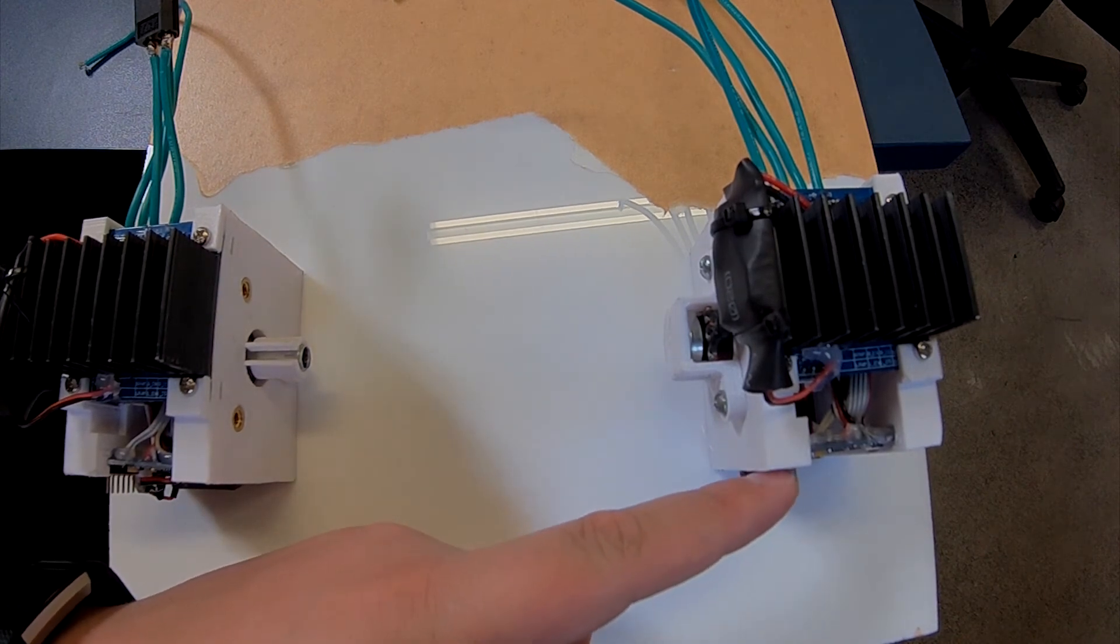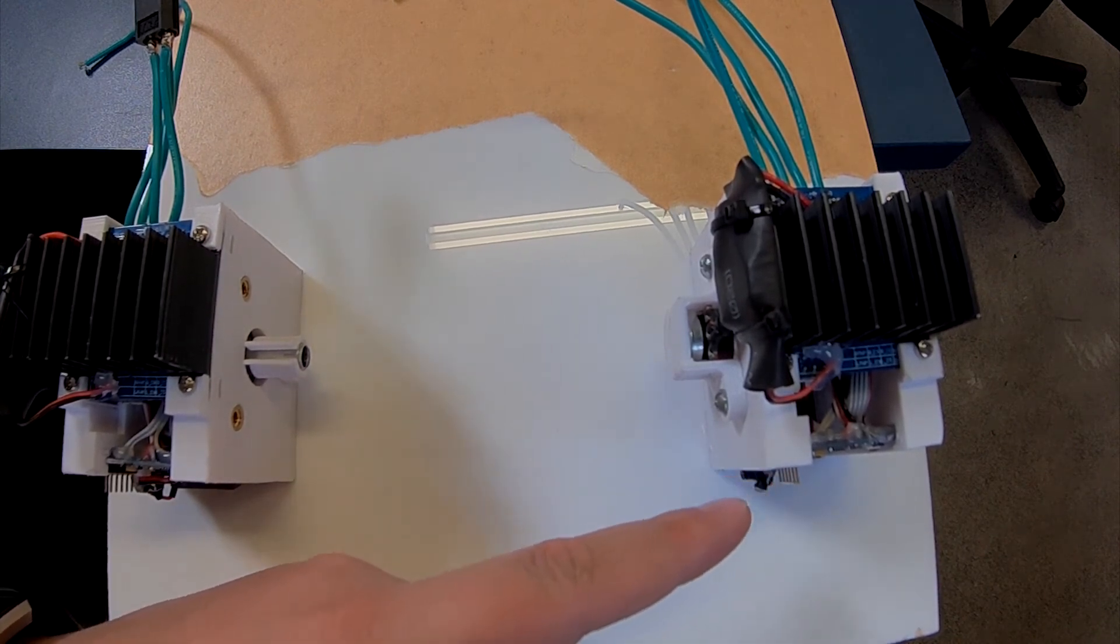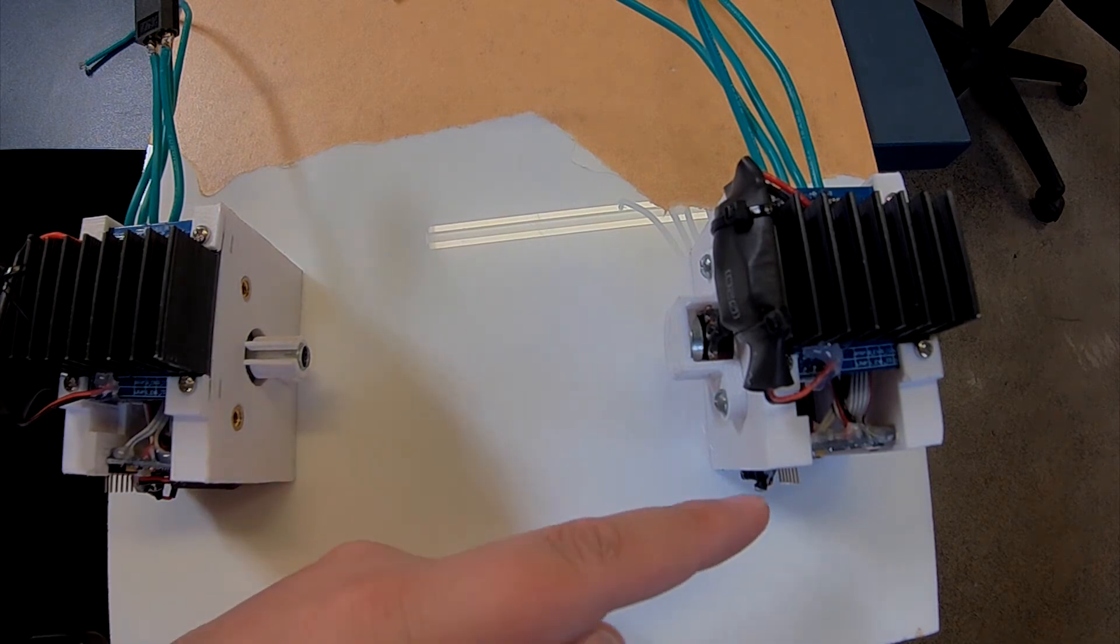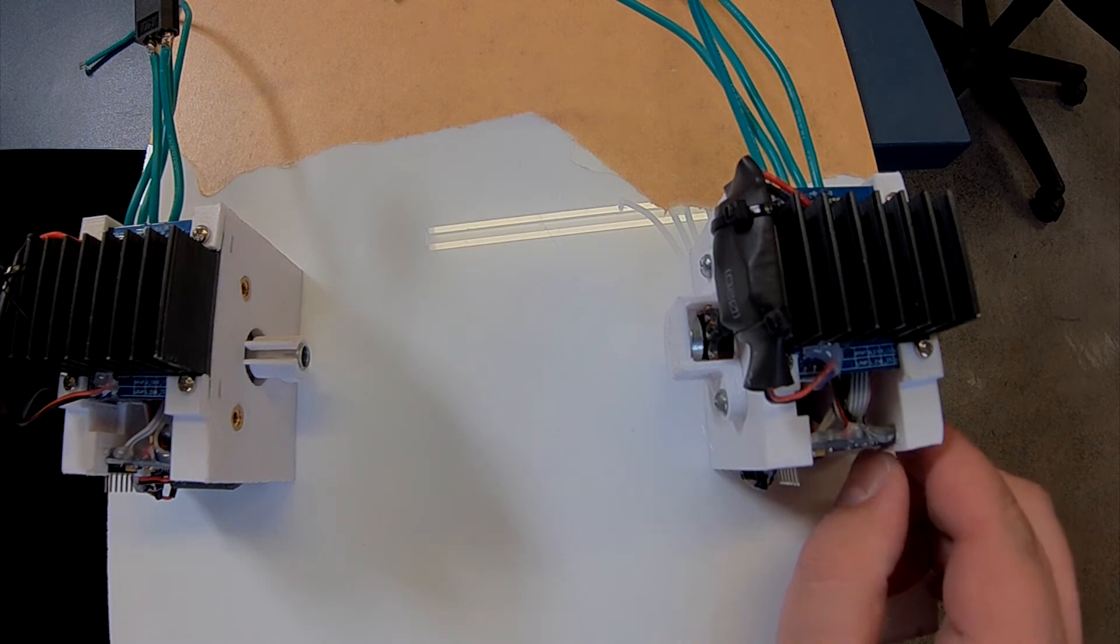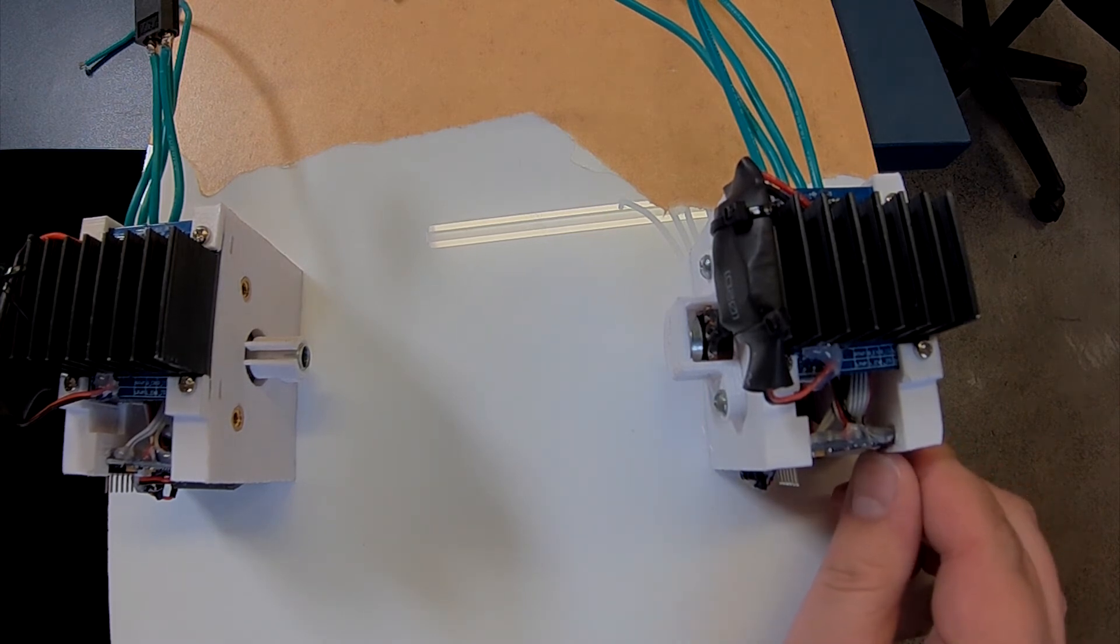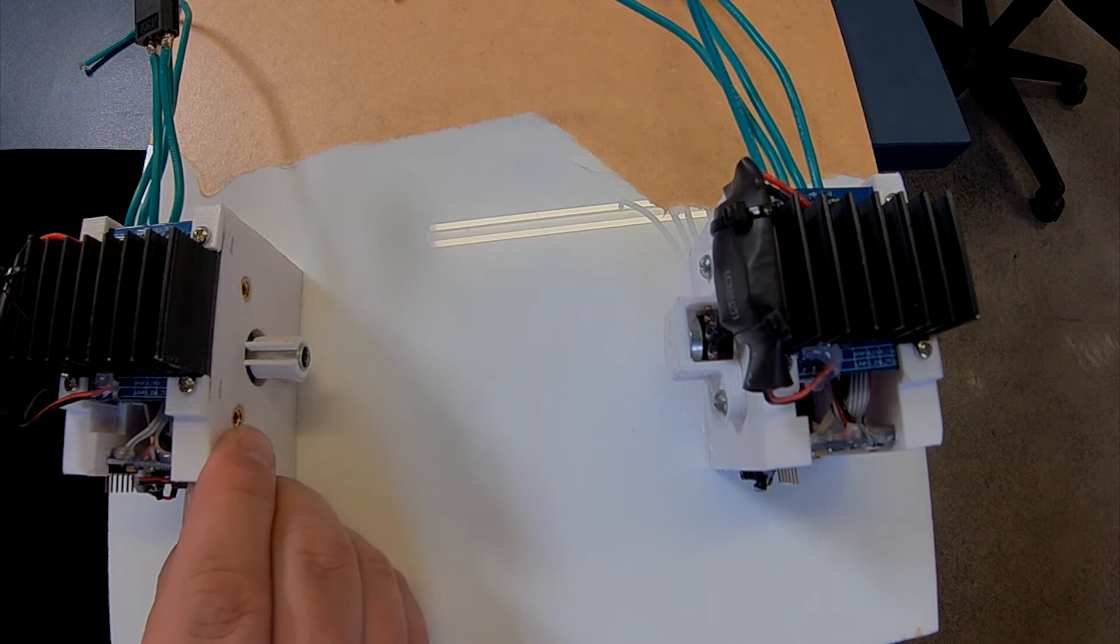The Arduino programming header is still available there. The serial header for the FTDI cable if you need to upgrade the firmware at all, and a little reset button right here on the front that you can still access when it's all assembled.